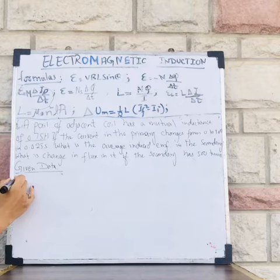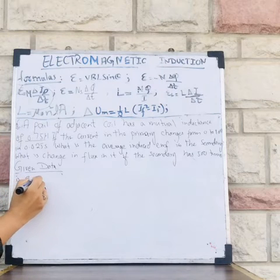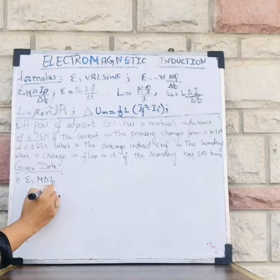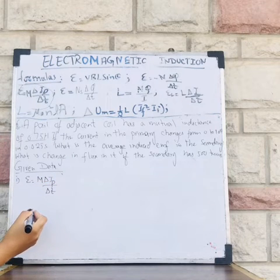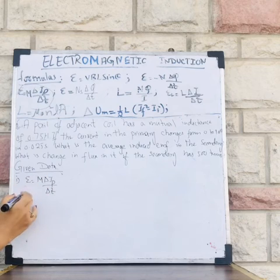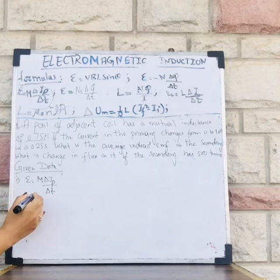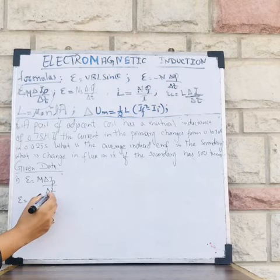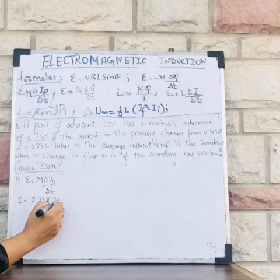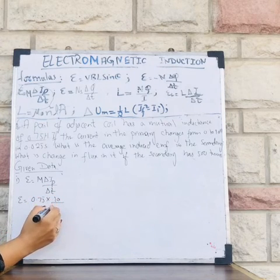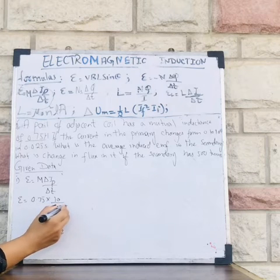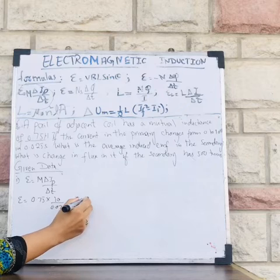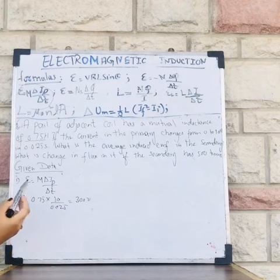Solution of the first part. The formula is: epsilon equals M times (delta I_p divided by delta t). It's straightforward — just put in the values. Epsilon equals 0.75 multiplied by 10, divided by 0.025. After calculation, I get 300 volts. So that is the average induced EMF in the secondary coil.